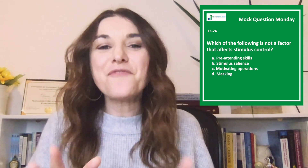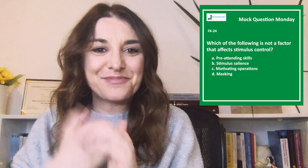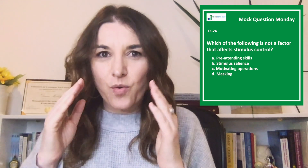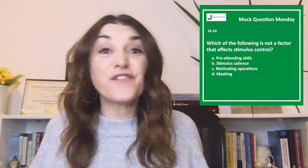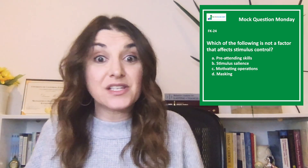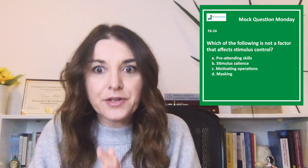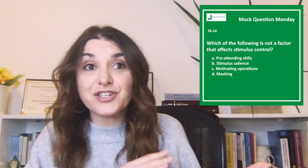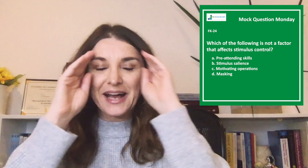Some factors that affect stimulus control are pre-attending skills — that's option A. The first priority of acquiring stimulus control is pre-attending skills; this is the first thing we teach. This includes looking at the teacher or the learning materials, listening to directions, sitting quietly, and attending for short periods of time.